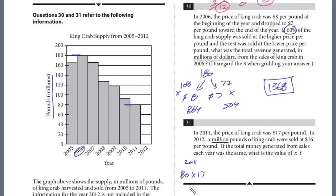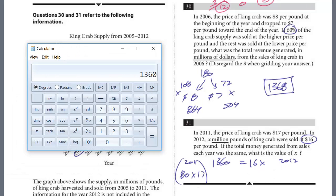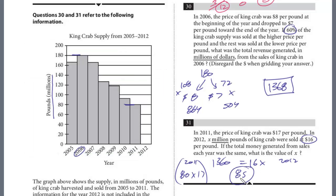And so we know that this is 1360, which is going to equal 2012, and we're not given the amount, but we're told that it's sold at 16. So we're just going to make an equation. It's going to be 16X, and the X is going to be the pounds in millions. And so we just divide each side by 16, and that will give us the answer, 85. And that's it.